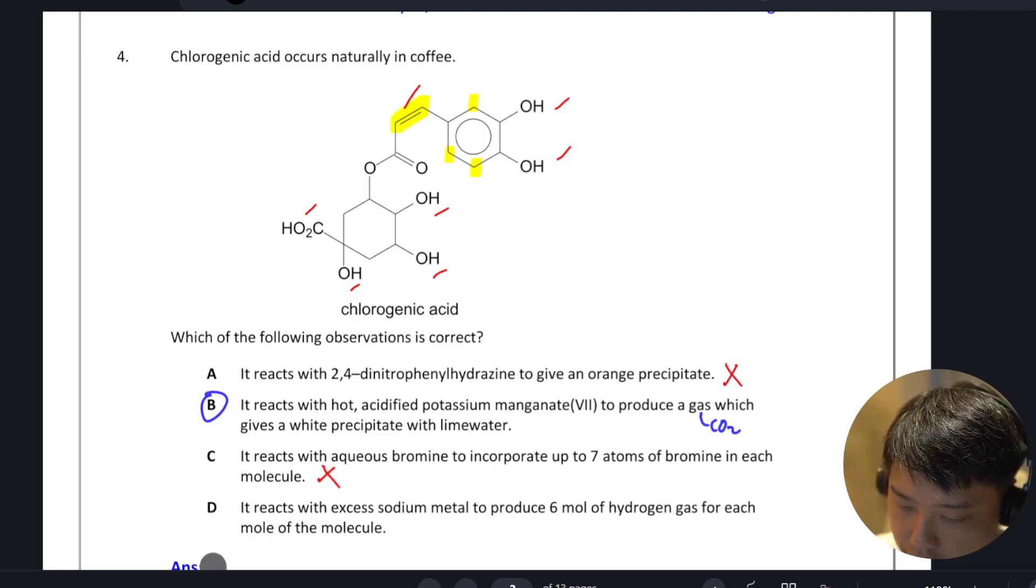Option D, it reacts with excess sodium metal to produce six moles of hydrogen gas. So hydrogen gas is H2. If you have six moles of hydrogen gas, it means that you have to have 12 of the H+. So in the molecule, do we have 12 H+? No.